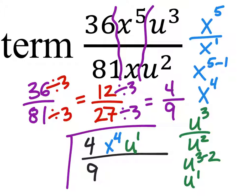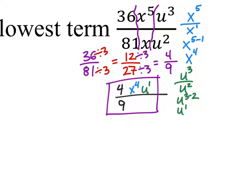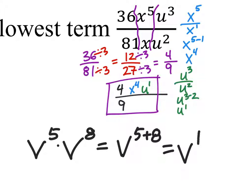And that would be our simplest form of this expression. Using a different problem, if we had something like v to the power of 5 times v to the power of 8, if we expanded these, we would find that we would just be adding the exponents. And that's v to the power of 13.